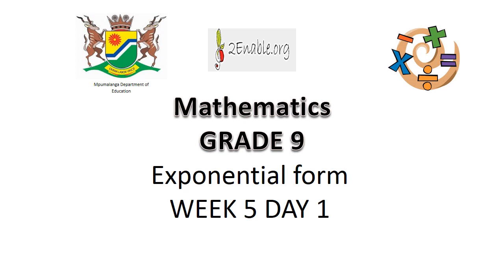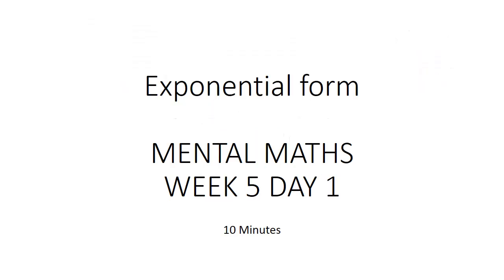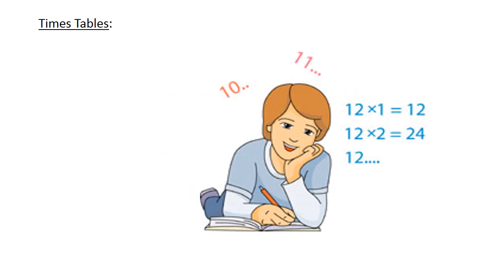Exponential form. Mental math. Times tables: 7 times 3 equals 21. 8 times 6 equals 48.